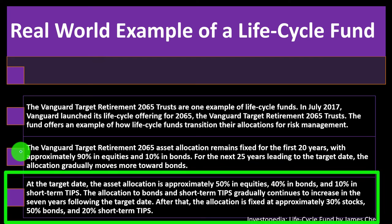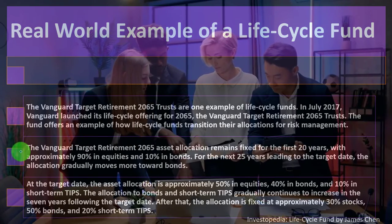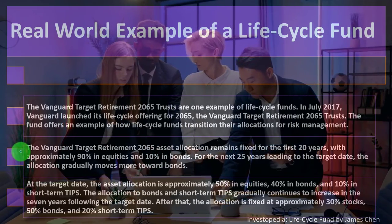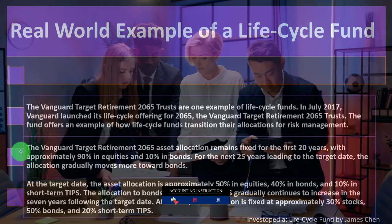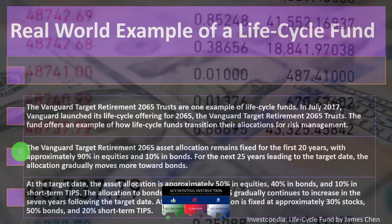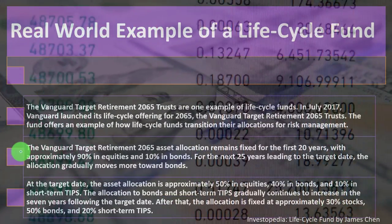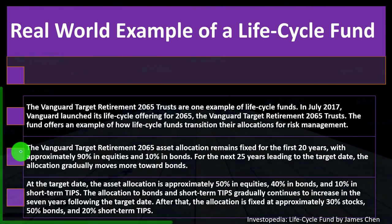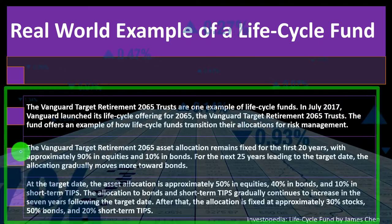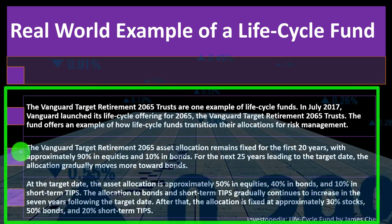At the target date, the asset allocation is approximately 50% in equities, 40% bonds, and 10% in short-term TIPS. The allocation to bonds and short-term TIPS gradually continues to increase in the seven years following the target date. After that, the allocation is fixed at approximately 30% stocks, 50% bonds, and 20% short-term TIPS. Once you hit the target date and are in retirement, you may be living off the proceeds — wanting money more allocated toward fixed income, bonds, and dividend-paying stocks, so you can live on those distributions while keeping investments rolling.